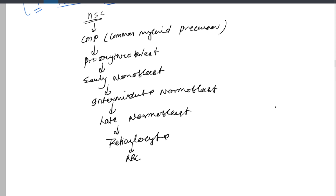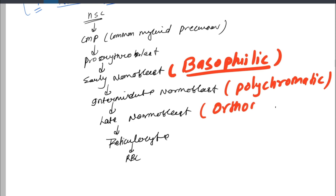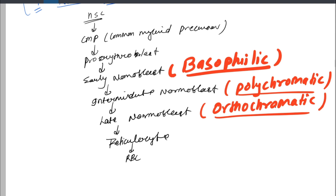Something important: the early normoblast is also called the basophilic normoblast. The intermediate normoblast is called the polychromatic normoblast. And the late normoblast is called the orthochromatic normoblast. You should remember these three terms: basophilic, polychromatic, and orthochromatic.